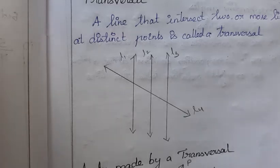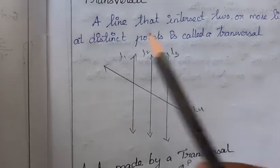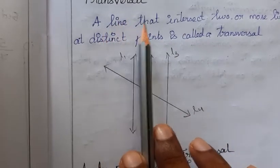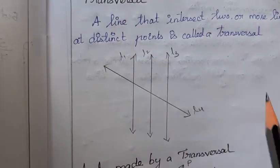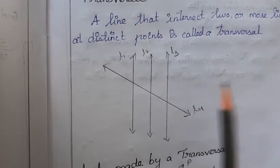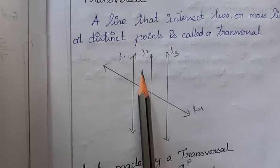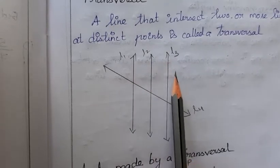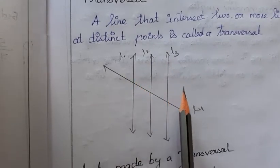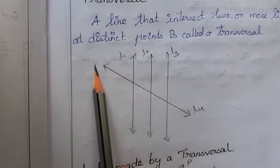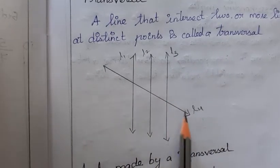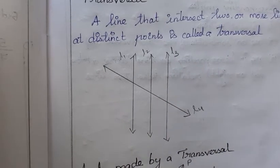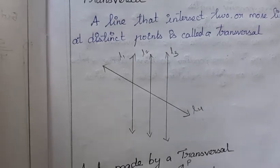Hi students, today we are going to see about transversal. A line that intersects two or more lines at distinct points is called a transversal. In this figure, L1, L2, L3 are three lines intersected by L4, so L4 is called the transversal line.